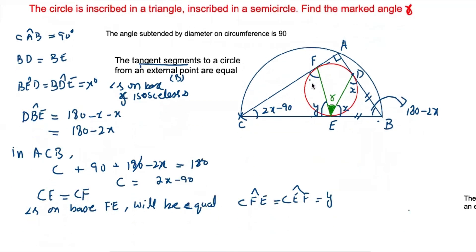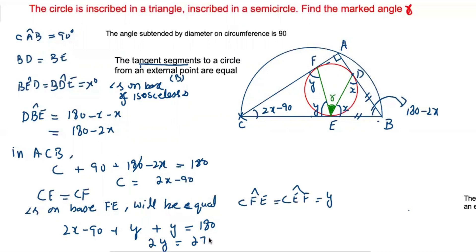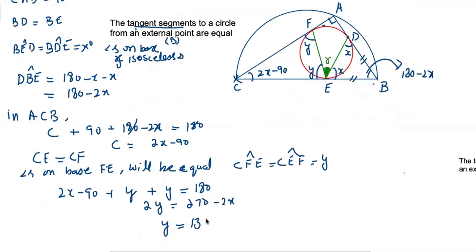Now to find y in terms of x: the sum of interior angles of triangle CEF is 180. We write: (2x minus 90) plus y plus y equals 180. So 2y equals 270 minus 2x, which gives y equals 135 minus x, with that value divided by... therefore y equals 135 minus x.